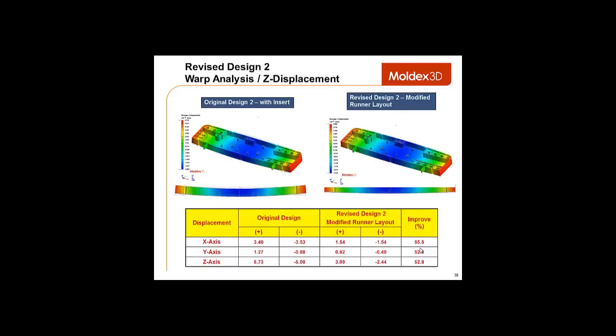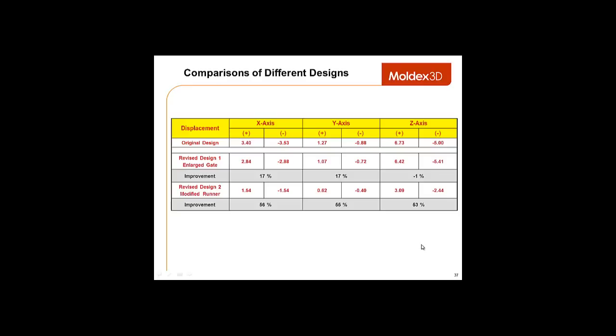Below, you can see the warpage of the original design versus the revised design. And the improvements were above 50%. And here is a final comparison of all the designs. And it shows the second redesign greatly improved the warpage by providing a more balanced filling of the cavity, which provided a more uniform packing effect and uniform volume shrinkage.